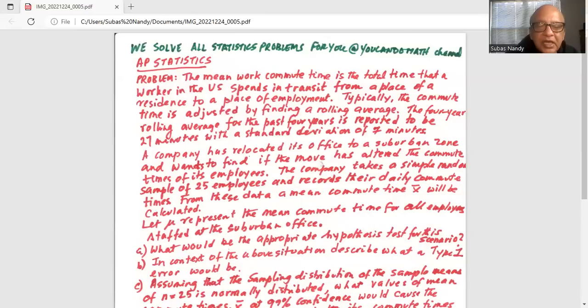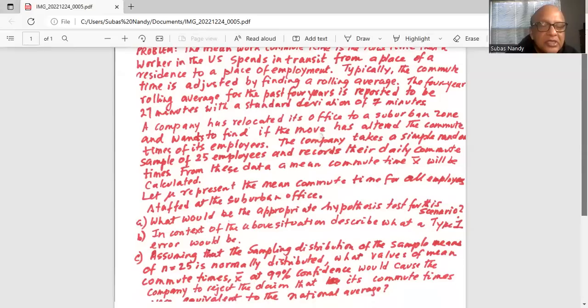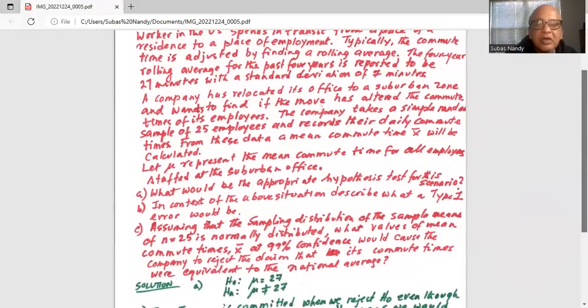And part c assuming the sampling distribution of the sample means of n equal to 25 is normally distributed. What values of mean commute times x bar at 99 percent confidence would cause the company to reject the claim that its commute times were equivalent to a national average.